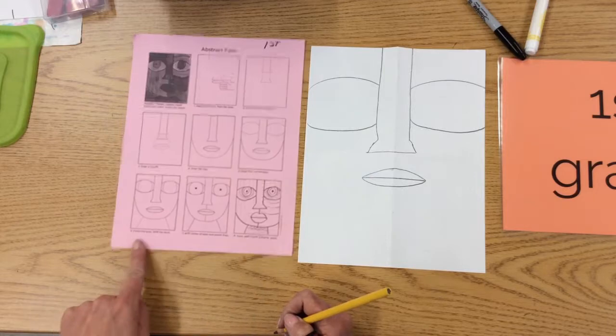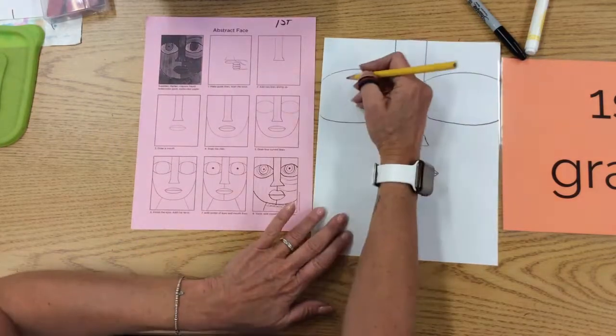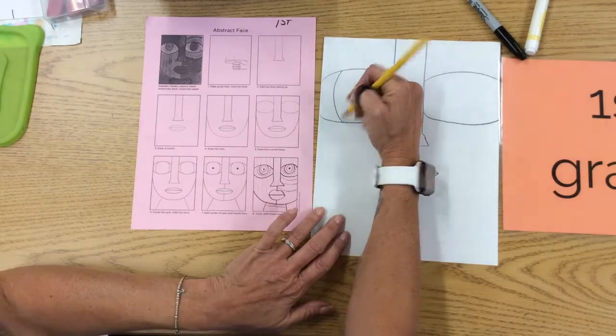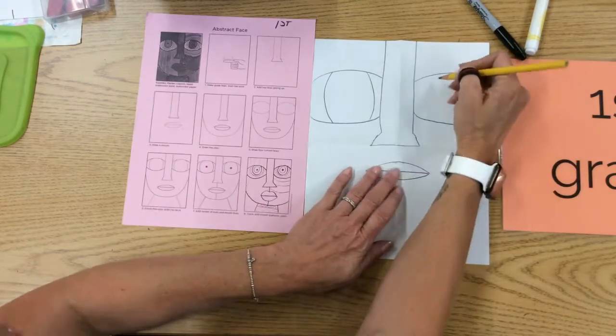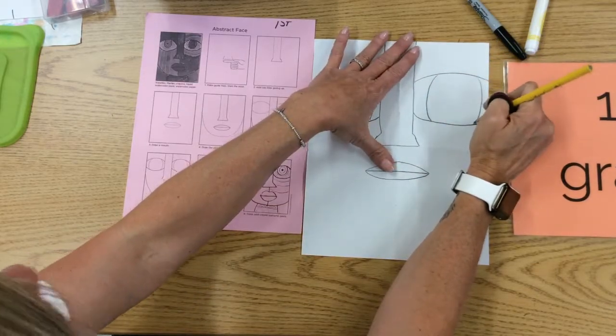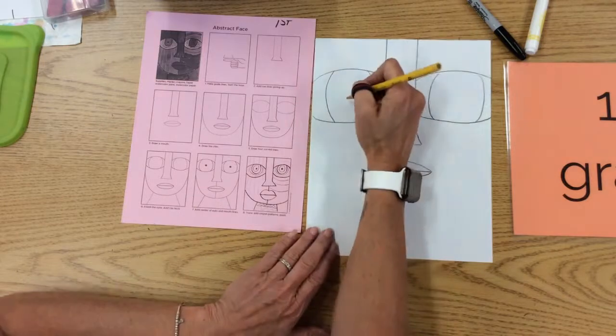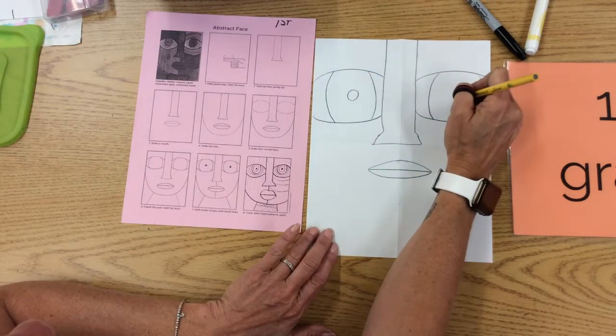Next step, it says finish the eyes and add the neck. We want to have parentheses. There we go, parentheses. And then after that, I have a circle. Do not fill it in, don't worry about that just yet.